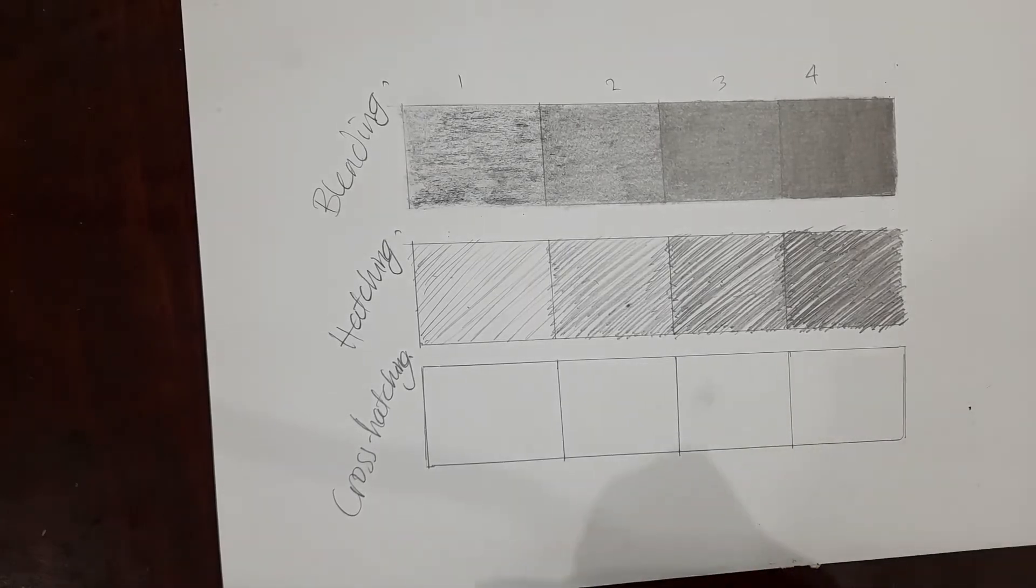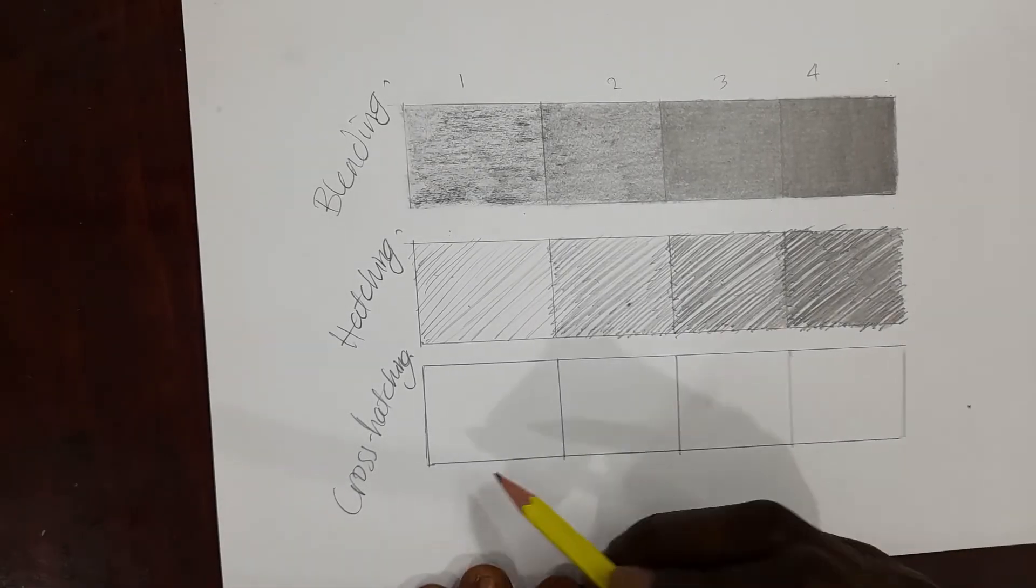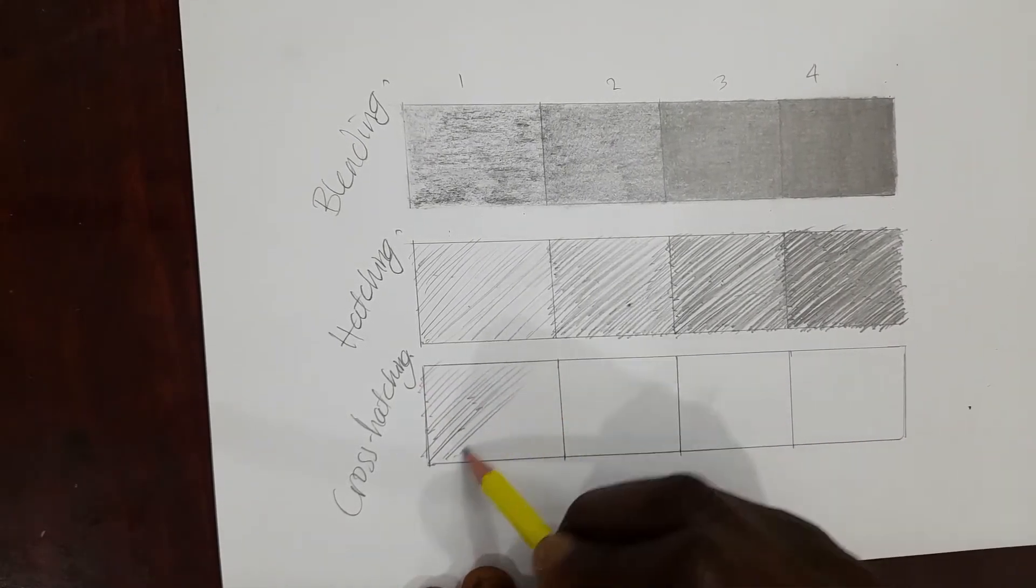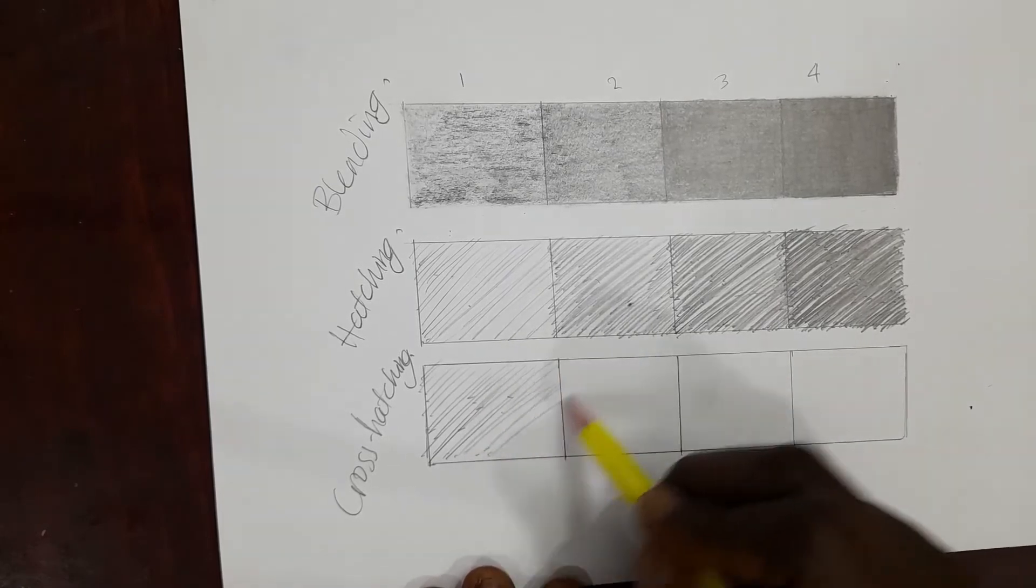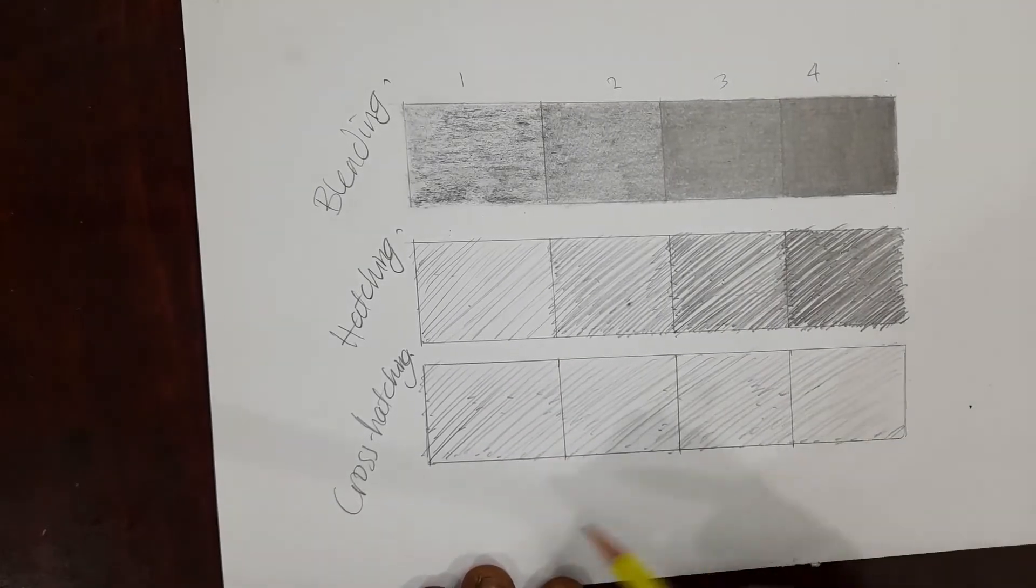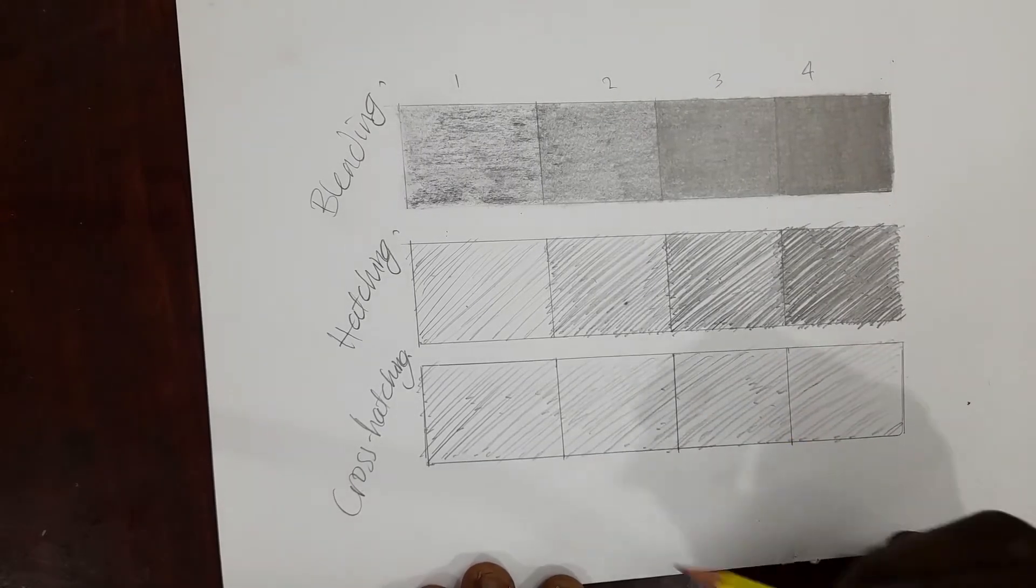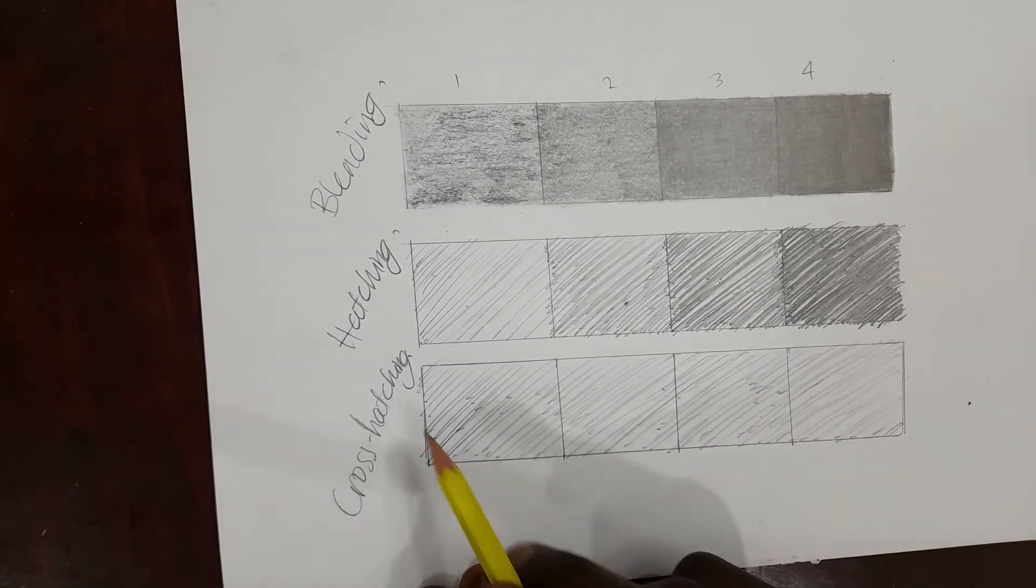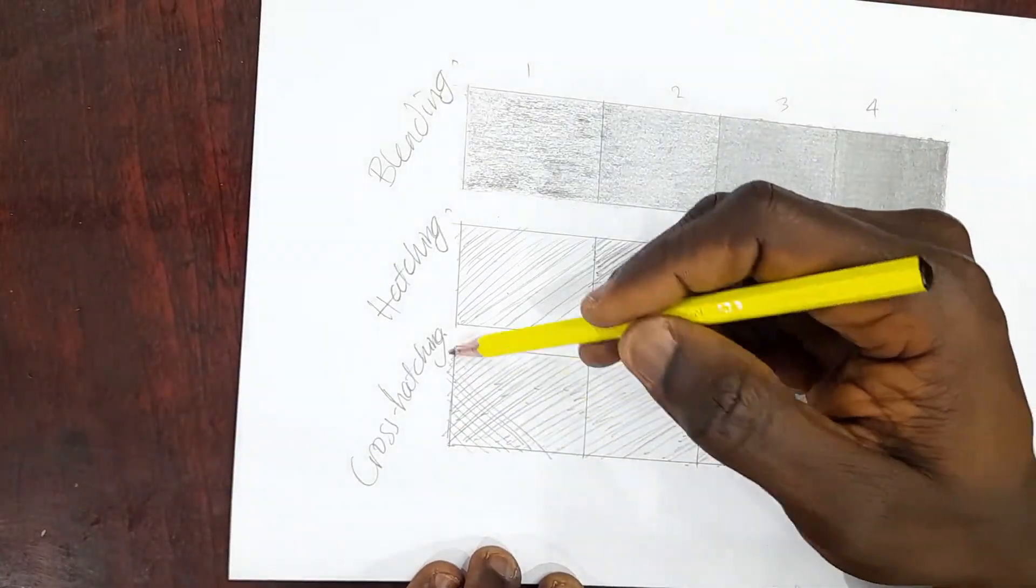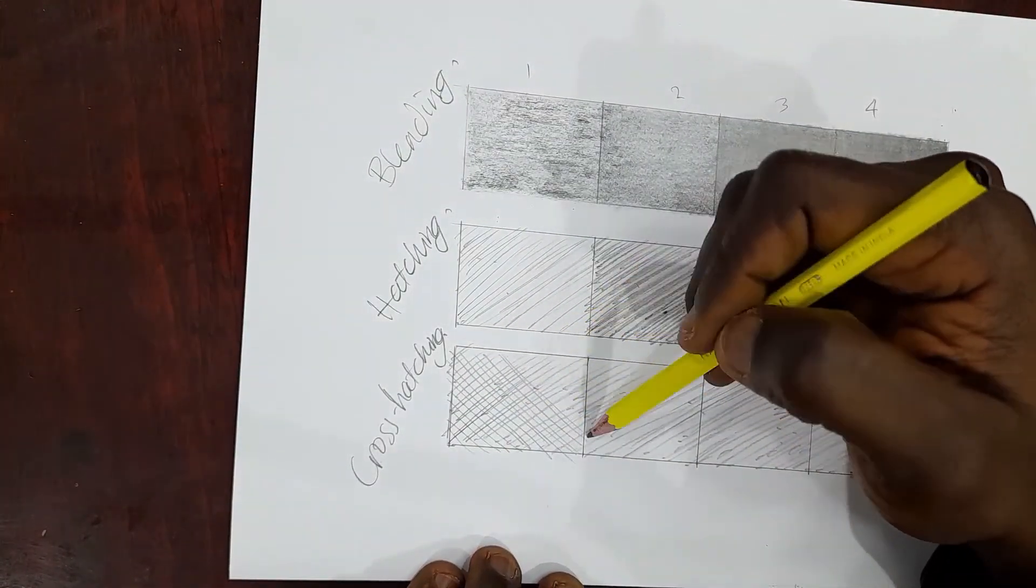So let's go to the last one for today, which is cross-hatching. Cross-hatching is the use of multiple lines in multiple directions. So in cross-hatching you have to first of all do hatching and then you cross it in another direction. So this is my lighter tone now.